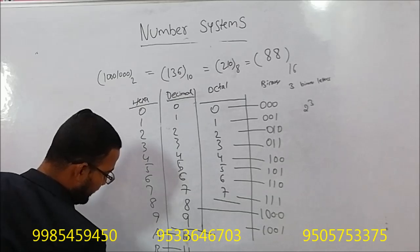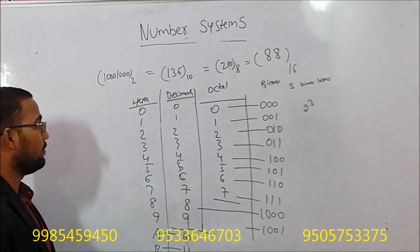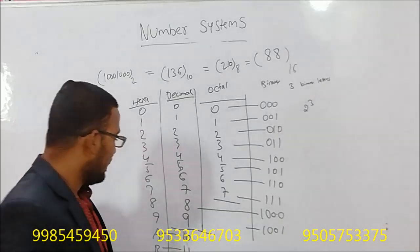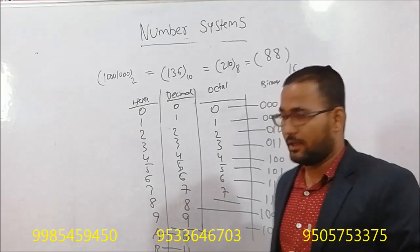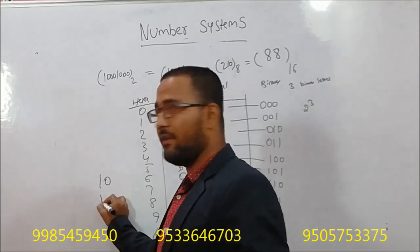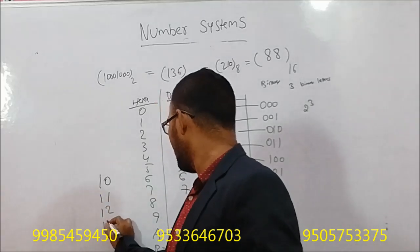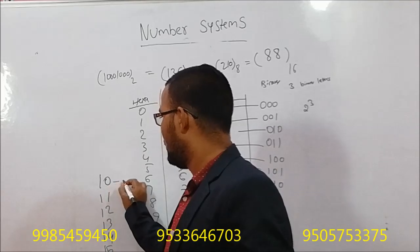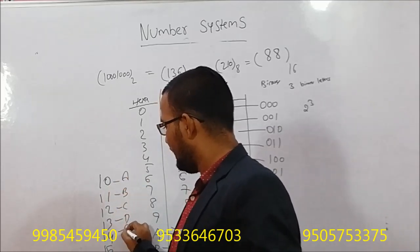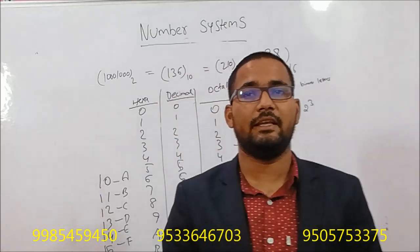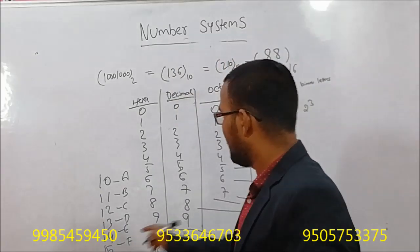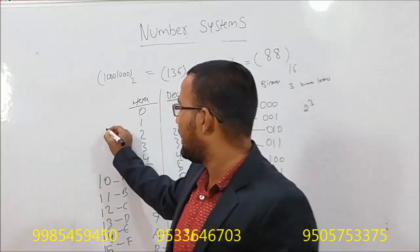So A equals 10, B equals 11, C equals 12, D equals 13, E equals 14, F equals 15. In the decimal number system the digits go up to 9, then in hexadecimal, the numbers 10 through 15 are represented as A, B, C, D, E, F respectively.